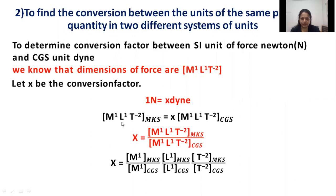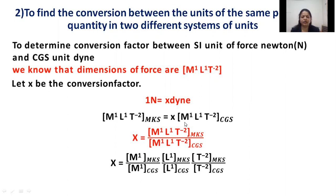Since force has the same dimensions in both systems — M raised to 1, L raised to 1, T raised to minus 2 — we write the MKS units on one side and CGS units on the other. We use M1, L1, T1 for one system and M2, L2, T2 for the second system to derive the conversion. In the MKS system, length is in meters, mass in kg, time in seconds. In CGS, length is in centimeters and mass is in grams; time is seconds in both.